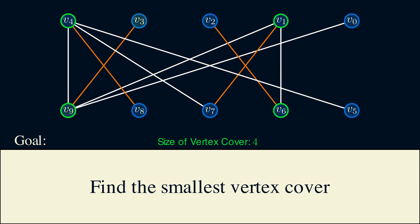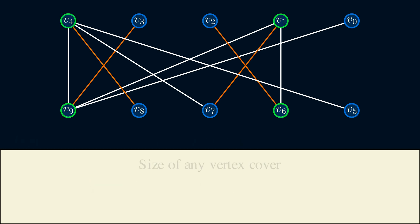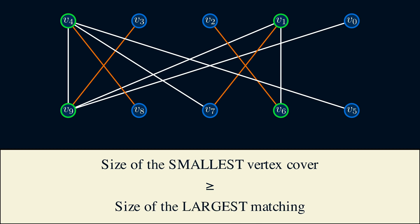For every edge in the matching, we need at least one of its endpoints to be in the vertex cover. Otherwise, that edge won't be covered. For example, if we remove vertex 4, then edge 4-8 is no longer covered. The implication here is that the size of any vertex cover is at least the size of any matching. Or in other words, the smallest vertex cover is at least the largest matching. This means for our example, we can't have a vertex cover of size 3.